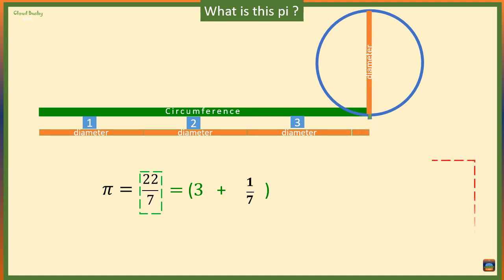Look here. If we express 22 over 7 as a mixed fraction, we get 3 and 1 over 7. That means the little bit more diameter is equal to 1/7 of the diameter.